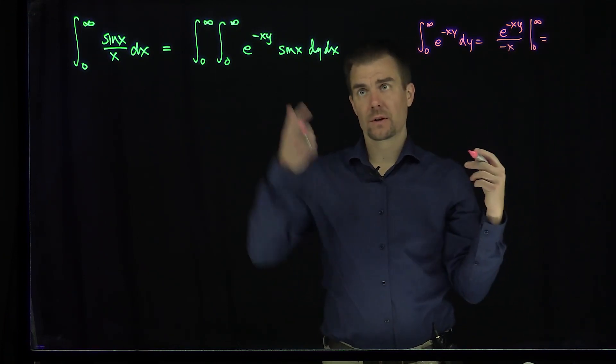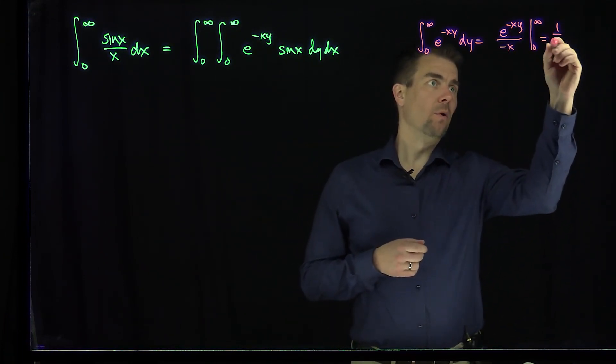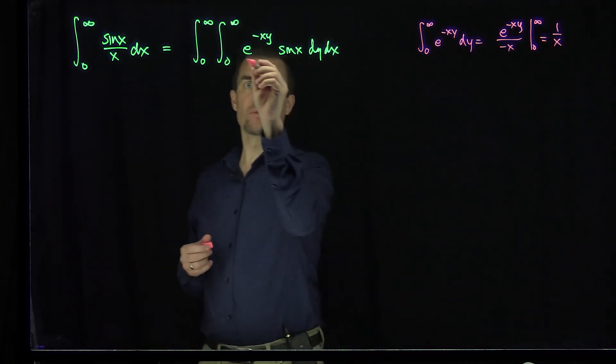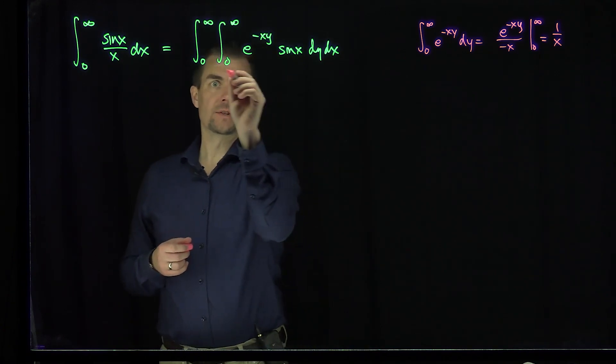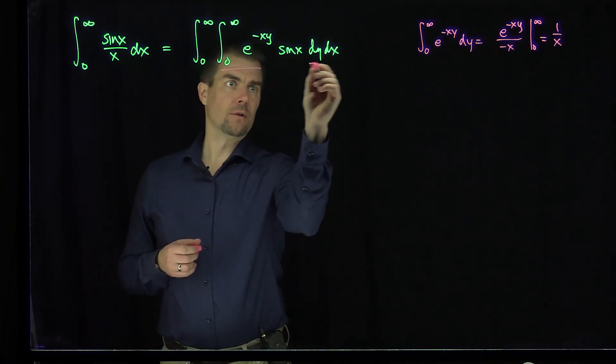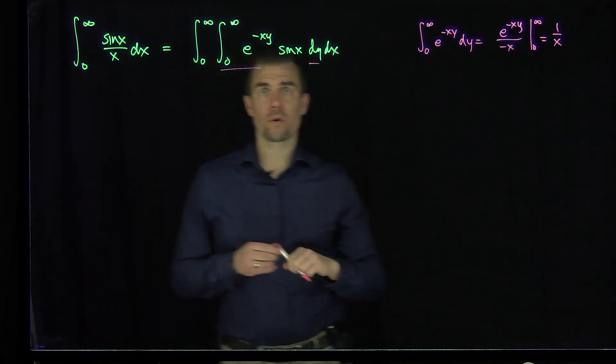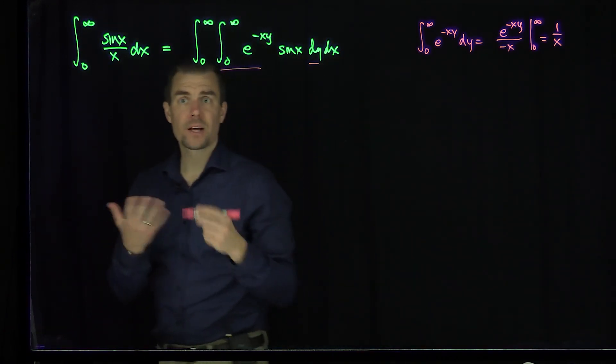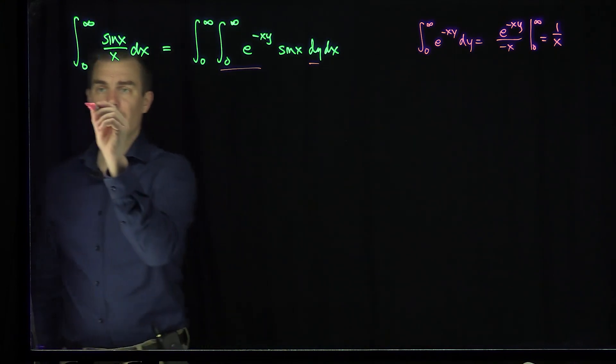The top limit gives zero and the bottom limit gives one over x. So this inner integral will give a one over x. Now by Fubini's theorem, we can change the limits of integration.